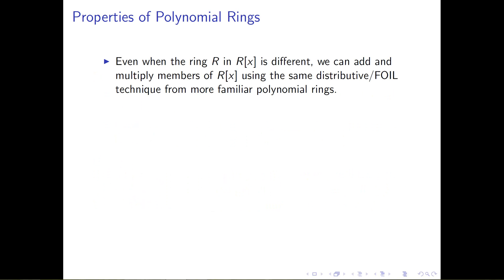Now let's move on away from that non-standard example and study some basic properties of polynomial rings. Hopefully everything I have to say here will be a familiar topic, but we're going to do everything abstractly, and it may have been a while since you've seen these properties, so you can think of this as a little bit of a refresher. Even when the ring R in the polynomial ring R adjoined X is less standard — something like Z mod 5 or Z mod 6 — we always perform these multiplications in the same way. That is, we always add and multiply members of R adjoined X using the same distributive techniques from more familiar polynomial rings.